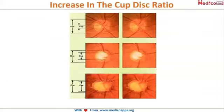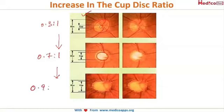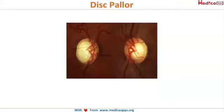Looking at the cup-disc ratio progression: in the first image it appears normal at about 0.3 to 1. As the disease progresses, the pallor increases and the ratio reaches about 0.7 to 1. In the final stage it becomes almost 0.9 to 1 — the cup is so huge you can hardly see the neuro-retinal rim.